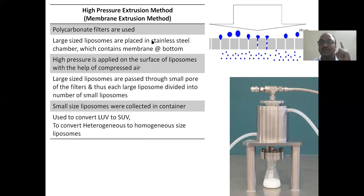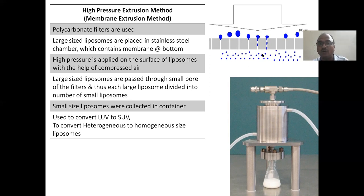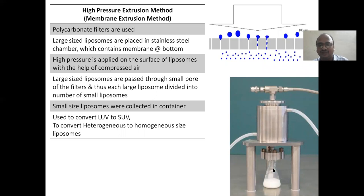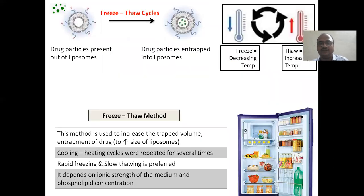High pressure extrusion method is also called membrane extrusion method. A very thin membrane is used — you can see the diameter — and this membrane consists of small holes. All the big liposomes are passed through this membrane with high pressure extrusion, so that you will get small liposomes outside. Big liposomes go in and small liposomes come out — very easy to remember.